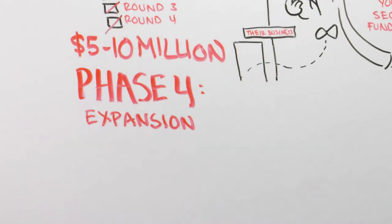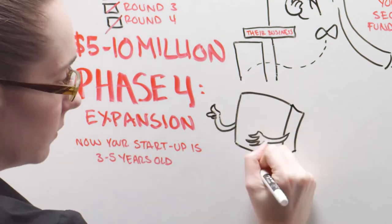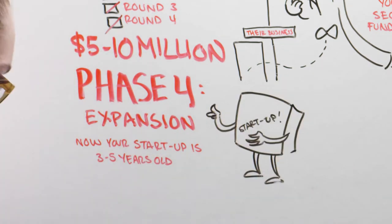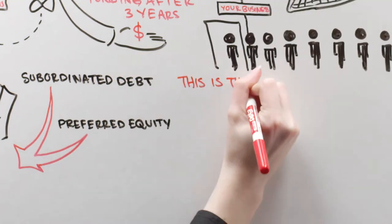Phase 4: Expansion. Now, your startup is 3 to 5 years old and hopefully close to turning a profit on its own. At this time, funding will come from subordinated debt or preferred equity. This is the expansion phase.